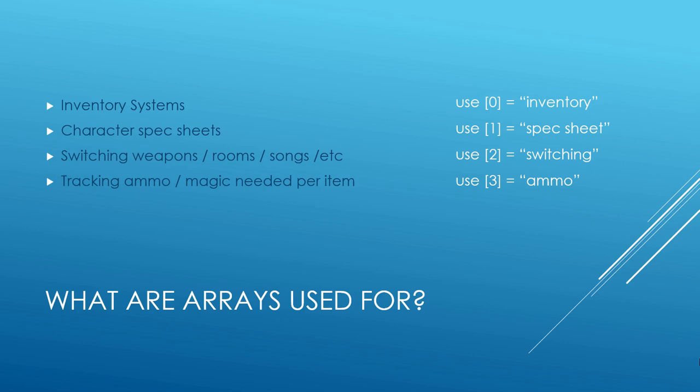The best way to look at an array is what it's used for — and this is probably why people get all crazy when they're doing array tutorials. They're so darn flexible, it's hard to really pin down an array and say this is what it's for. An array can be used for, as you see on my screen here, an inventory system, a spec sheet, switching weapons — we're going to use that kind of a concept in this tutorial. You can use it for tracking your ammo or the magic needed per item.